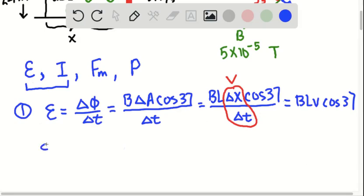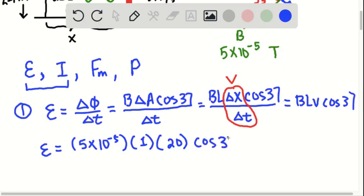I am now going to plug in all the information that I've been given for all of those variables. B is 5 times 10 to the negative 5th. L is 1 meter. V is 20 meters per second. And cosine of 37. So plugging all of that into your calculator, you should have a rounded number of 8.0 times 10 to the negative 4th volts.